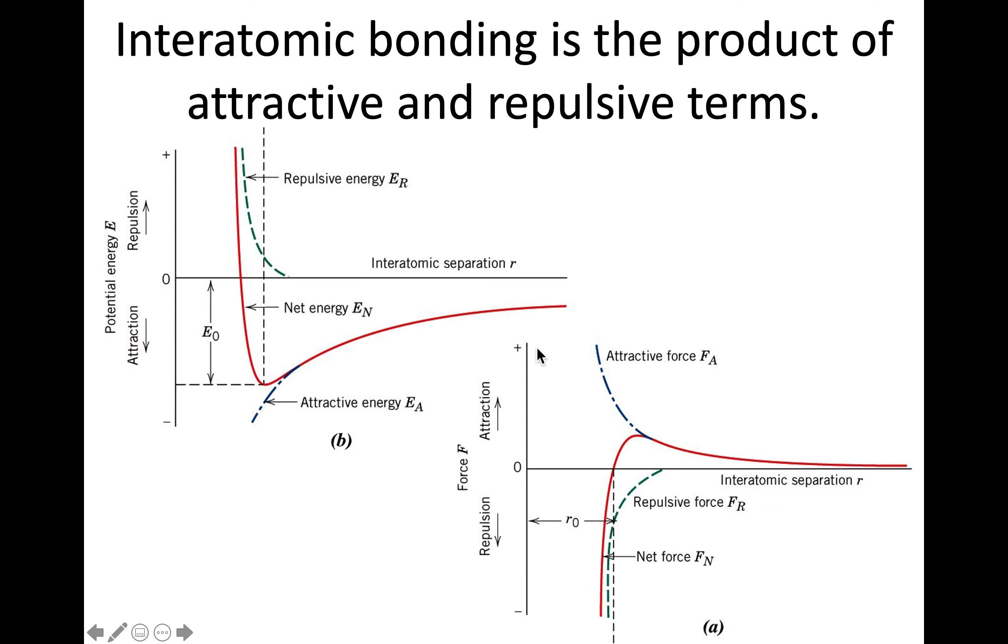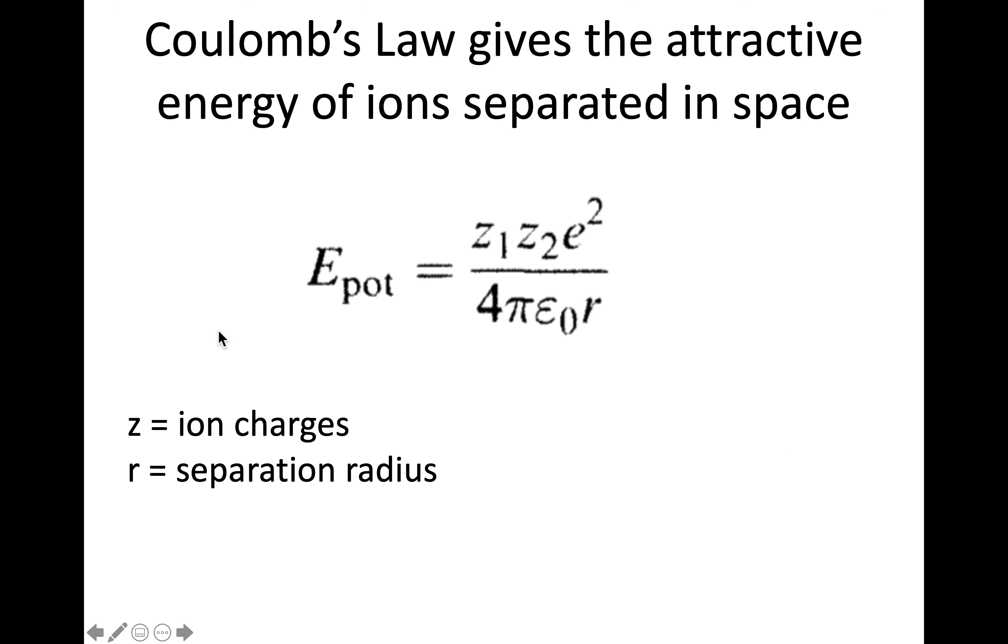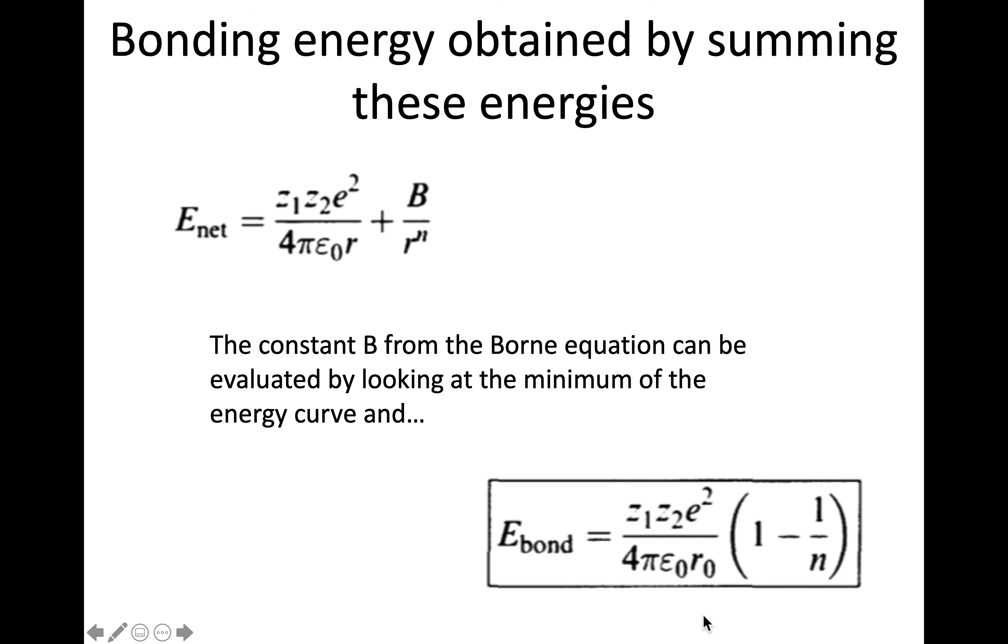And again, let me just sort of illustrate that on this curve. So this is the equilibrium energy. And then this distance from here on the separation distance, that is the equilibrium R, so R naught, and then this is E naught. So that's what we're evaluating to get this equation here. And so this is the bond energy for these two ions. And we're looking discreetly at one positive, one negative, or in this case.